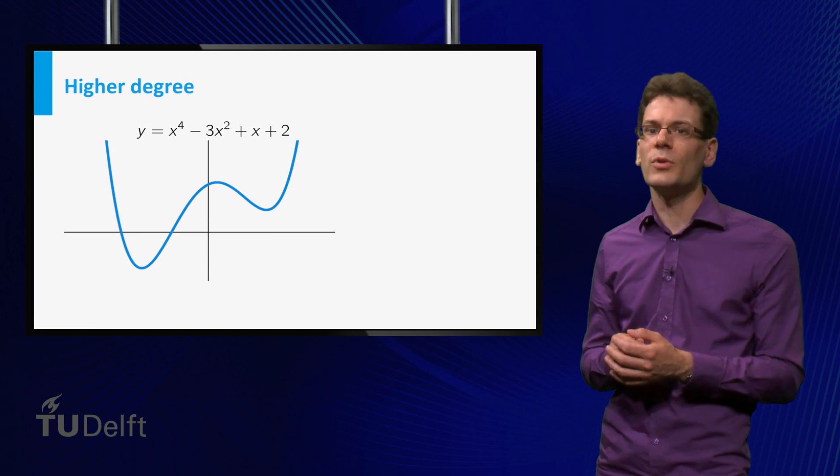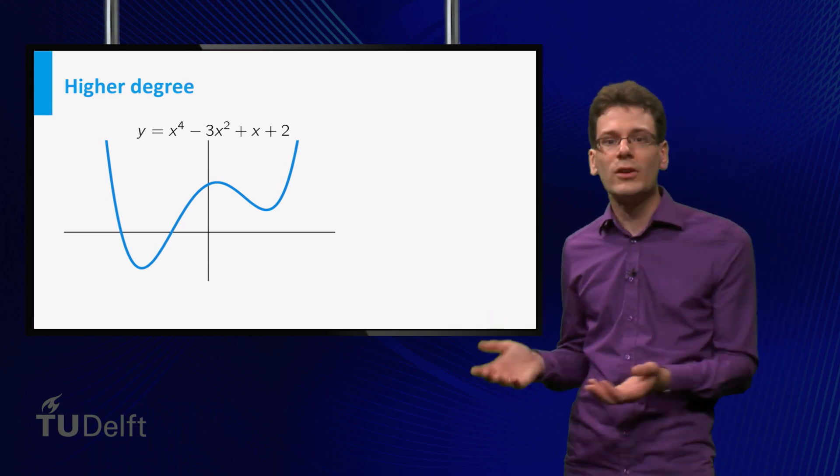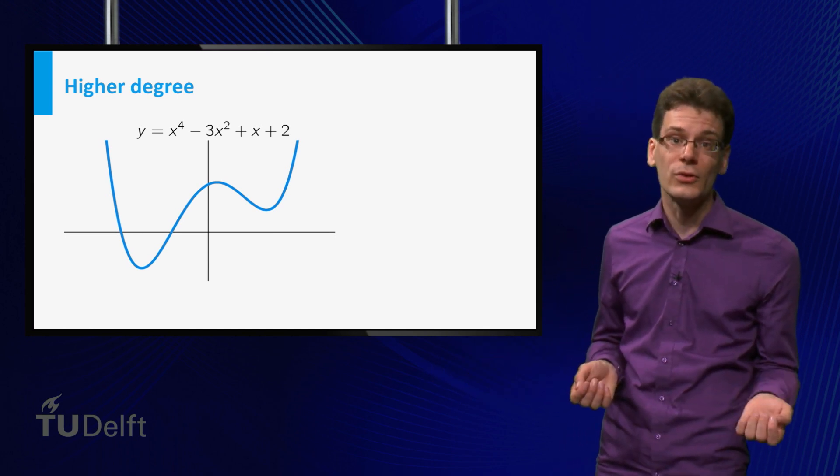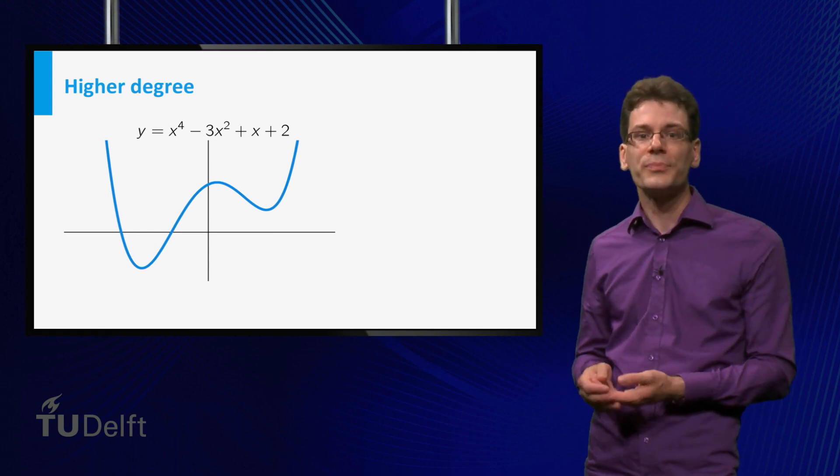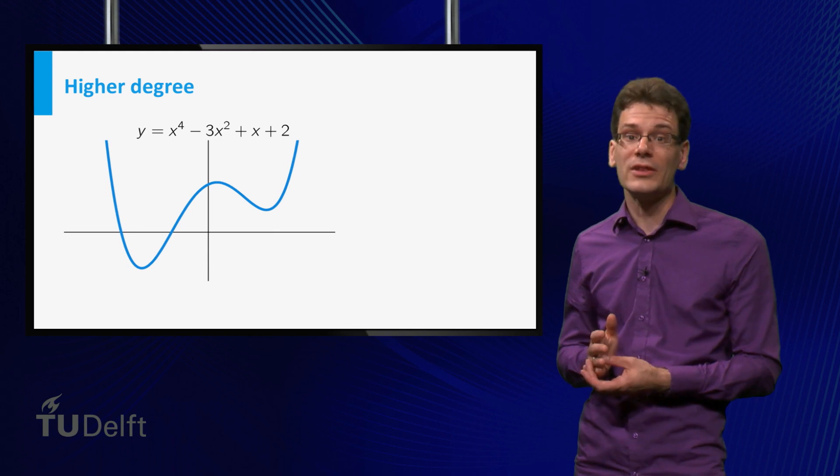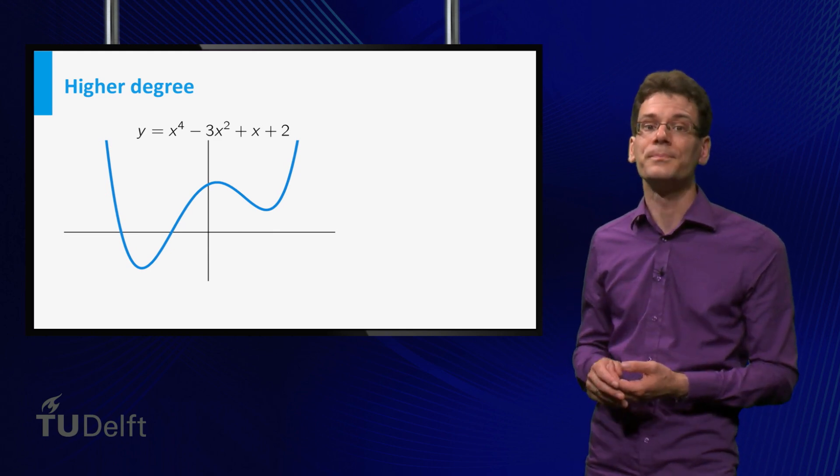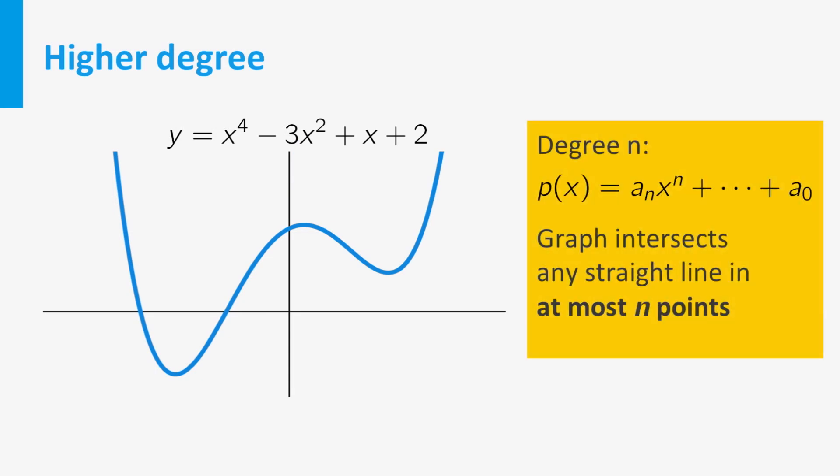What about polynomial functions of higher degree? Of course there is always a relation between the coefficients and the shape of the graph, but this relation becomes more complicated and obscure the higher the degree gets. We can say some general things though. It turns out that the degree is a measure of how complicated a polynomial function and its graph can be. In fact, the following is true. If you look at the graph of a polynomial function of degree n, then any straight line will intersect this graph in at most n points.